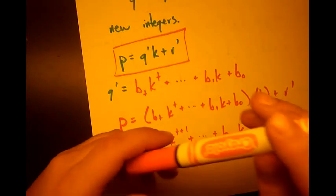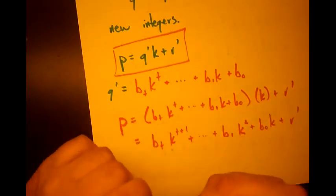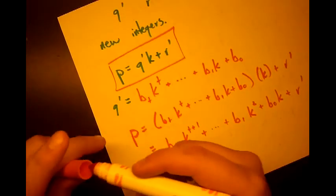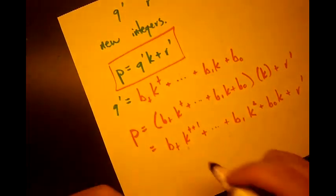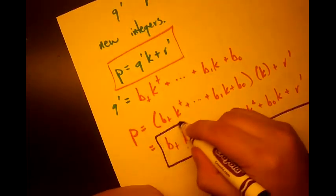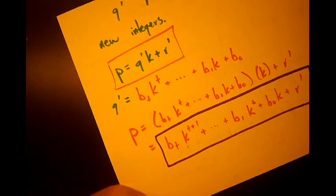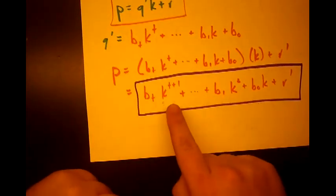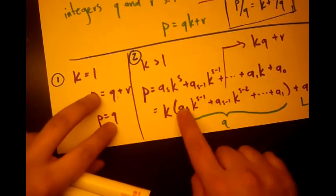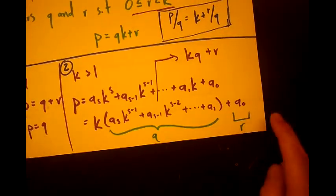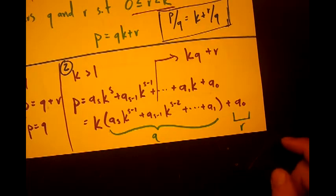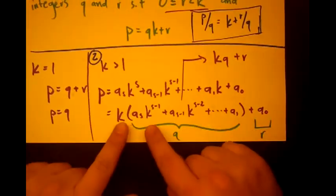what we need to see now is we need to use another part of the basis representation theorem. So now, let's just recap what we've done. So here we have a representation of p to the base k. And here we have a representation of p to the base k. But remember that there can only be one representation of p to the base k by the basis representation theorem. Which means that these two have to be equal.